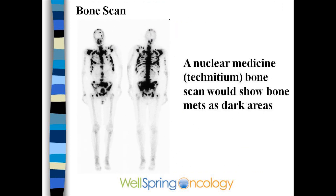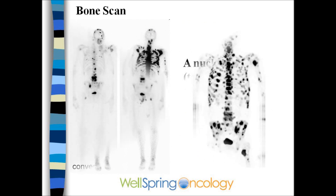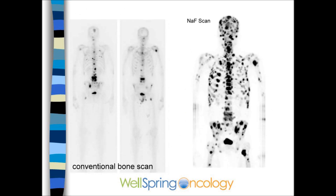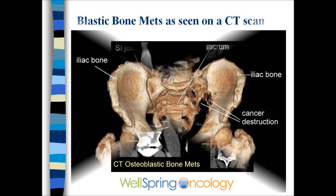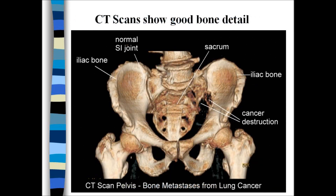A nuclear medicine bone scan is a good way to find all the spots in the body. The newer sodium fluoride PET scans are even more sensitive and more accurate. A CT scan will often show the lesions — here are blastic lesions or white lesions, and here are lytic lesions in the left sacroiliac on a CAT scan.